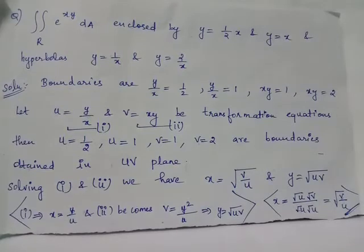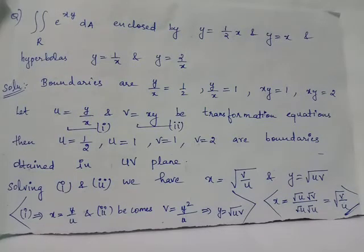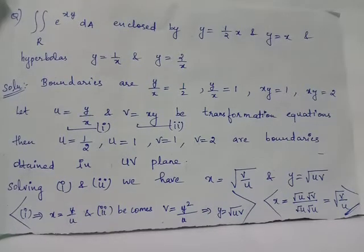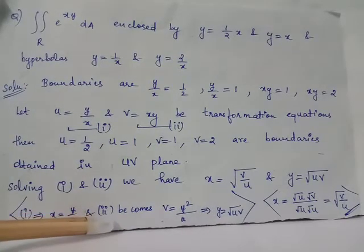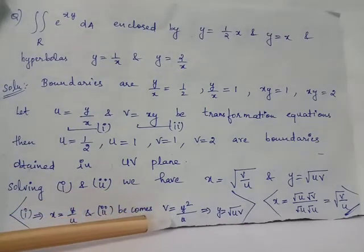Using the concept of the Jacobian, the region R in the xy-plane maps to region S in the uv-plane. We have already evaluated the boundaries for u and v, and we now find expressions for x and y in terms of u and v by solving equations 1 and 2. From equation 1, x = y/u, so equation 2 becomes v = y²/u.